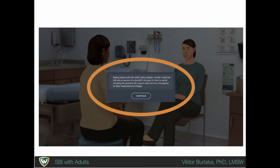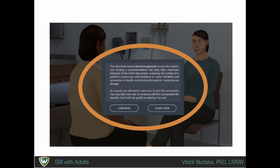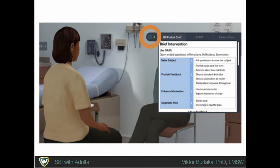The simulation may also provide text feedback helping you think about an alternative approach. When users make a significant mistake that can compromise the brief intervention, the system will suggest that users either continue practicing without passing the assessment, or restart to pass the assessment. Click on the Information menu on the right side. This menu contains information on motivational interviewing methods and brief negotiated interview steps. It may also contain the patient's or client's screening results and patient's or client's chart.